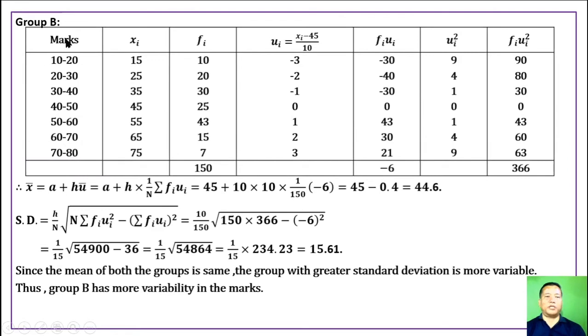Group B. For Group B, we have the marks column, mid-values column, frequency column, and UI as the new variable. We introduce XI minus A where A is 45 divided by scale.